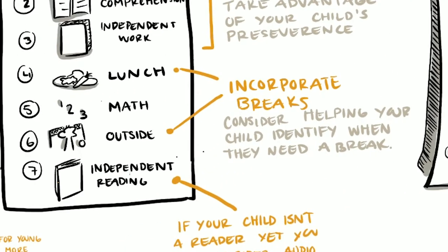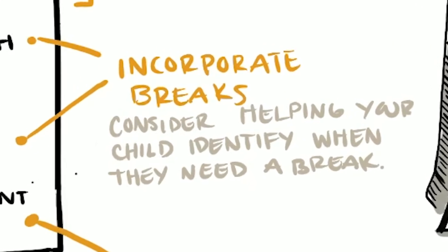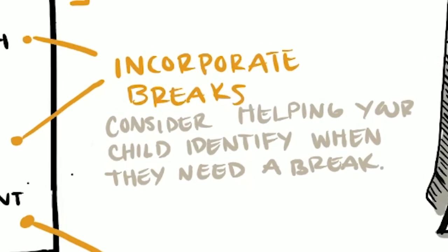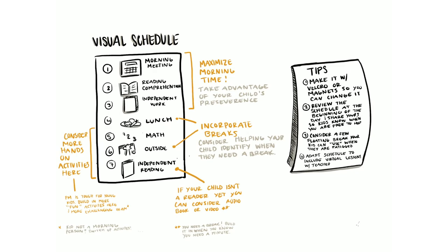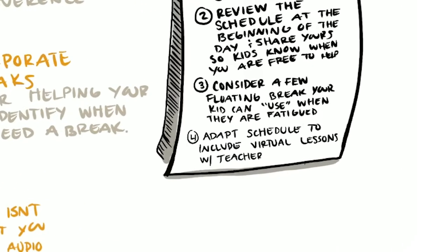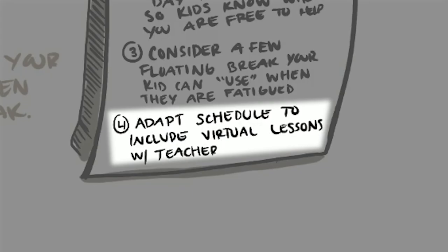Help your student be self-reflective about what their needs are and how to identify when they need a break. Make your schedule work for you and your student. If you're working full-time and have meetings, consider scheduling those when your student is going to be working with their teacher in a synchronous lesson.